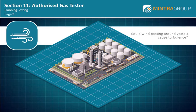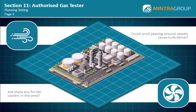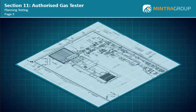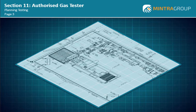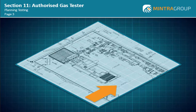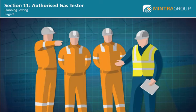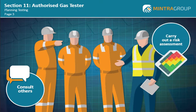You should also consider the layout of the plant. Could wind passing around vessels cause turbulence, mixing gas and air to form an explosive environment? Are there any fin fan coolers in the area that could move the gas and air to other areas? Access the general arrangement drawing of the area and consider how you will approach the test area, bearing in mind the current wind direction. If you consider that there may be a potential risk, consult others and carry out a risk assessment.